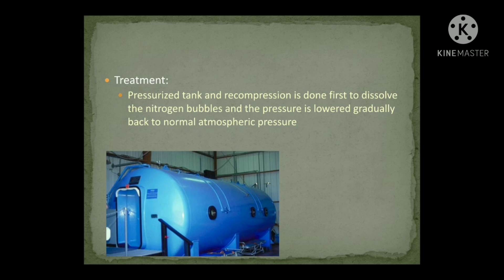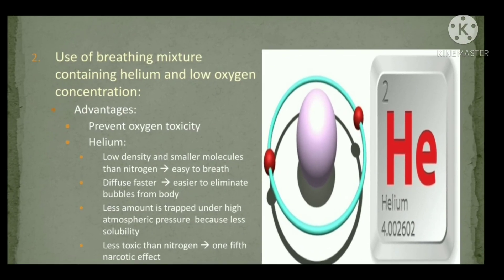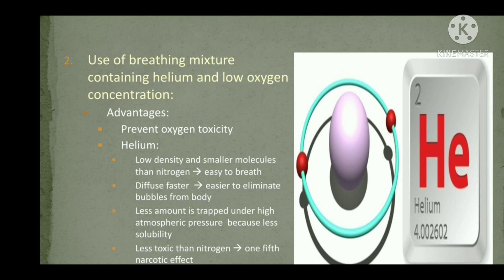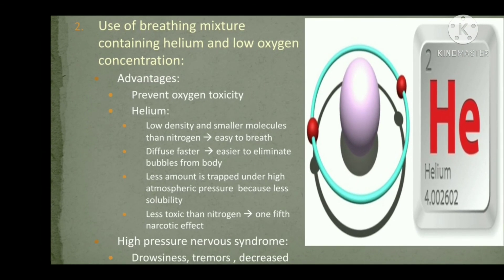For prevention of nitrogen narcosis, instead of nitrogen, an oxygen-helium mixture can be given. The advantages: helium has lower density and smaller molecules than nitrogen, so it can be easily breathed and diffuses faster. It can be easily eliminated as bubbles from the body. Less helium is trapped at high pressure because it is less soluble than nitrogen. It is also less toxic than nitrogen, having one-fifth the narcotic effect, allowing the person to safely breathe an oxygen-helium mixture.